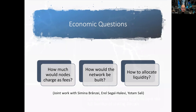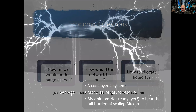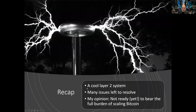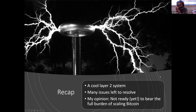To summarize the takeaways: the Lightning Network is a very cool second-layer system built on top of Bitcoin — rich, interesting, and with many issues left to resolve. In my opinion, it's not ready yet to bear the full burden of scaling Bitcoin, but it's evolving very fast. All the problems I've shown may have solutions. Thank you.